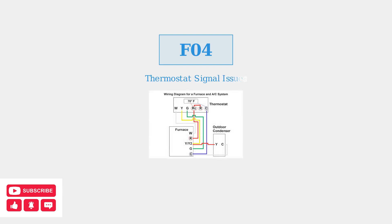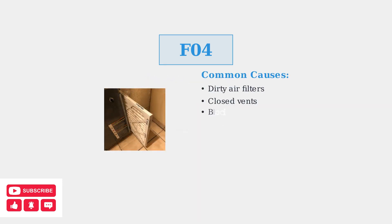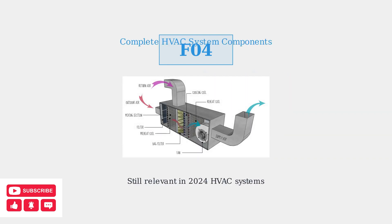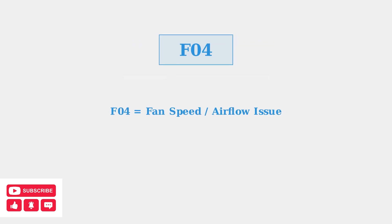The error typically means your system isn't receiving the correct signals from the thermostat, or there's a problem with the fan itself. Common causes include airflow problems such as dirty air filters, closed vents, or blocked evaporator coils that can cause the system to overheat. The problem might also originate from the outdoor unit, making this error code still relevant for Goodman HVAC systems as of 2024. Understanding the F04 error code is the first step in diagnosing and resolving fan speed and airflow issues in your Goodman HVAC system.